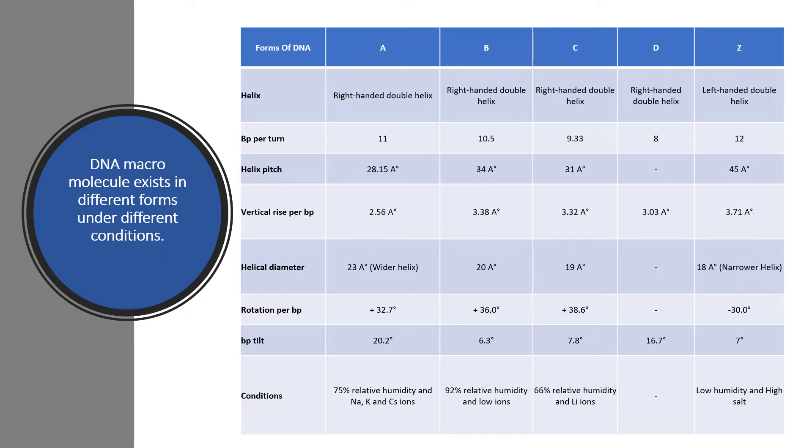Watson and Crick described the B form of DNA. Here A stands for alternate DNA, B is for balanced DNA, Z is for zigzag DNA because it has zigzag backbone. Always remember all forms are right handed double helix except Z DNA which is left handed.